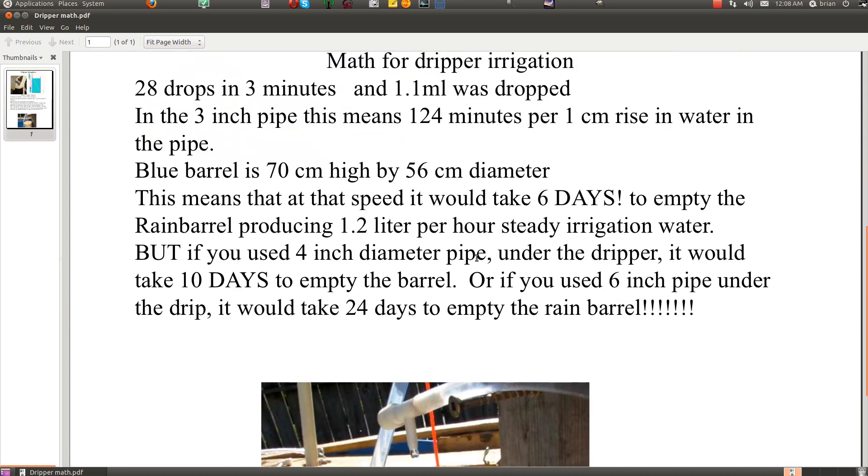So this is, you know, for me at least, this is getting interesting. Or if you use 6 inch diameter pipe under the drip, it would take 24 days to empty the rain barrel.